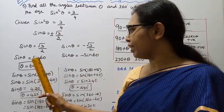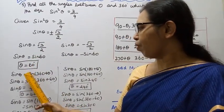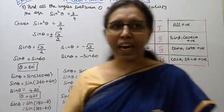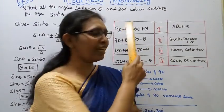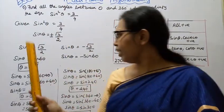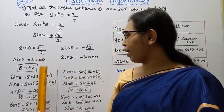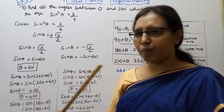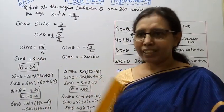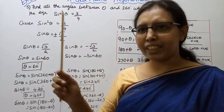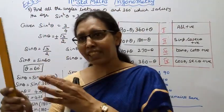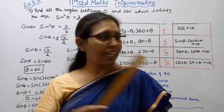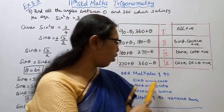Since sin theta equal to sin 60, theta equal to 60 degrees. Also, 180 minus theta gives another angle in the second quadrant: 180 minus 60 equals 120 degrees.